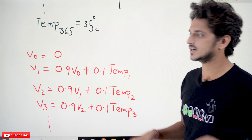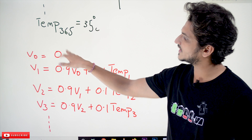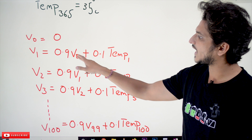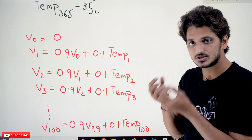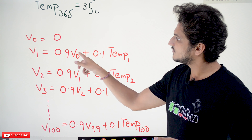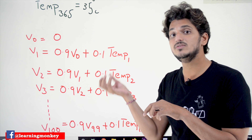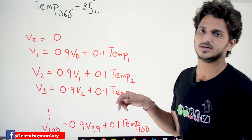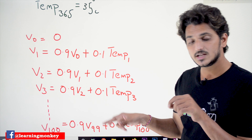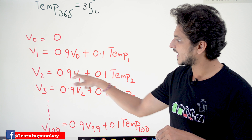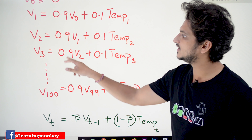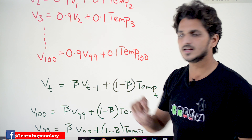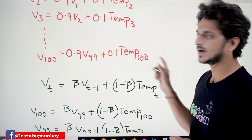V0 is equal to 0. Initially we take it as 0, and we calculate the exponential weighted average for the first point. V1 is equal to 0.9*V0 + 0.1*temp1 — meaning 90% of the previously calculated value plus 10% of today's temperature. V2 is equal to 0.9*V1 + 0.1*temp2. The third day: V3 = 0.9*V2 + 0.1*temp3. Likewise, V100 = 0.9*V99 + 0.1*temp100.